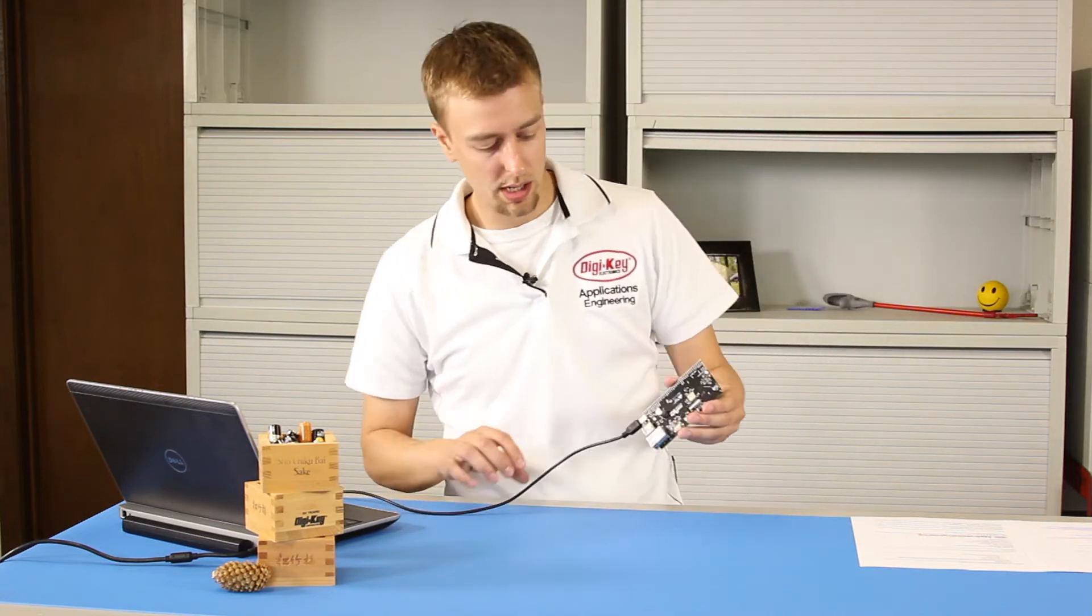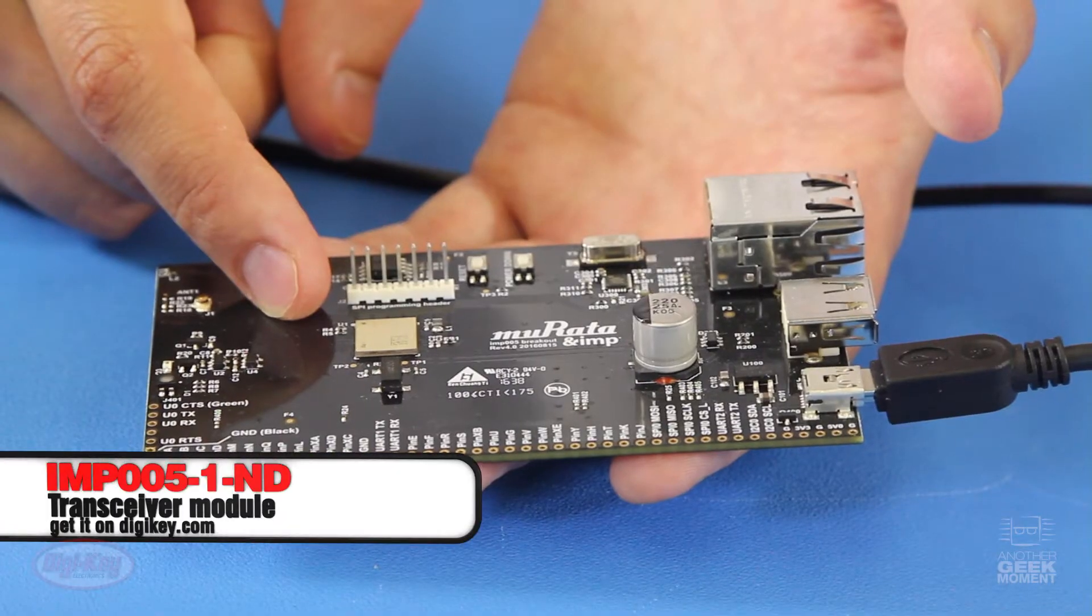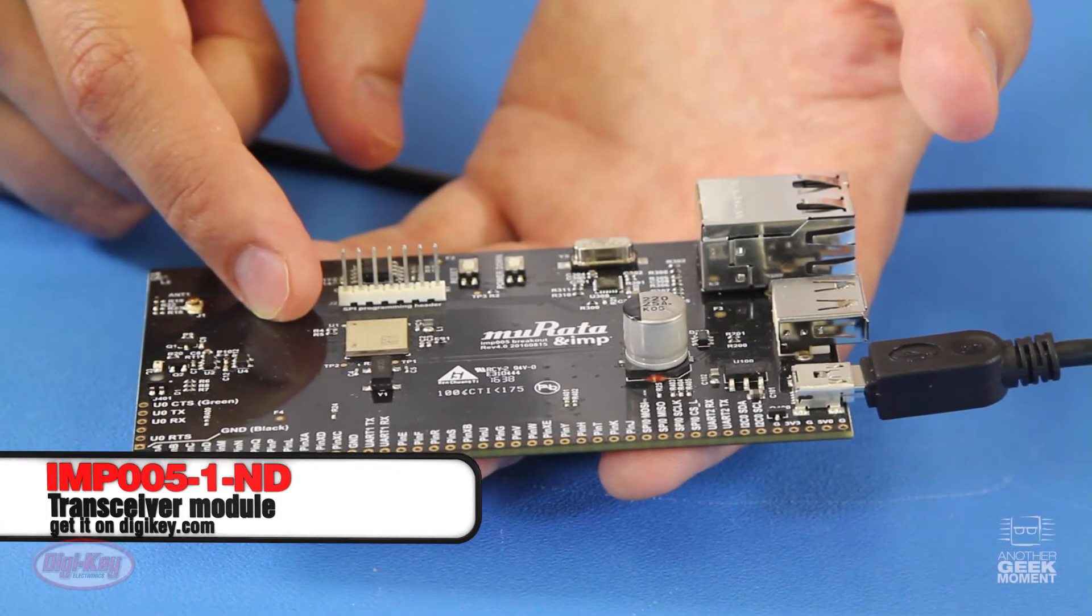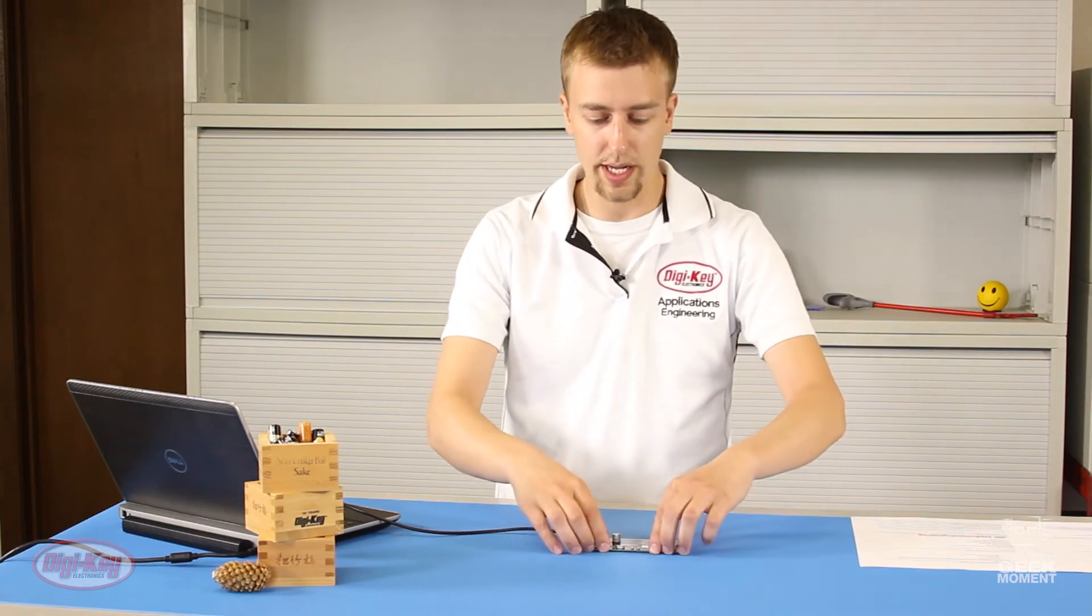This is created as a partnership between Electric Imp and Murata. This is about a 10x10mm little package. This is going to be used to help in an end-to-end device setting.